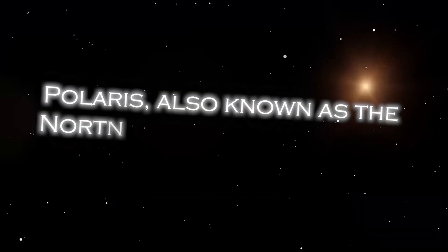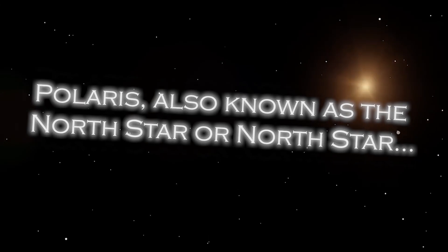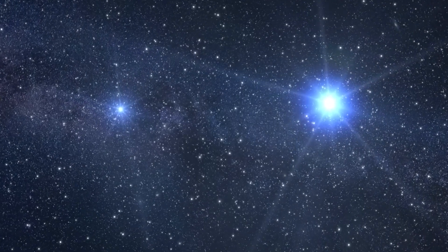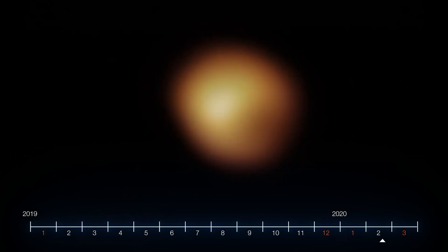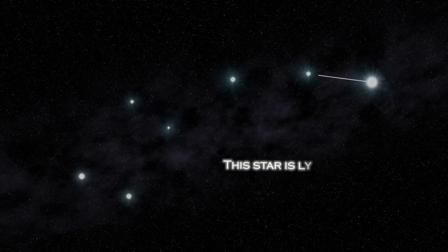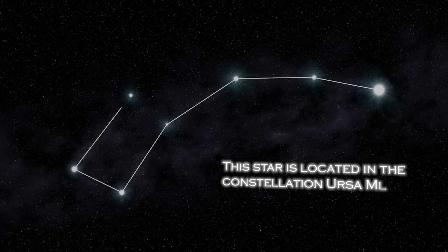Polaris, also known as the North Star, occupies a special position in the sky because of its proximity to the celestial North Pole. It is almost directly over the Earth's North Pole, which gives the illusion that it remains static in the northern sky. The star is located in the constellation Ursa Minor.